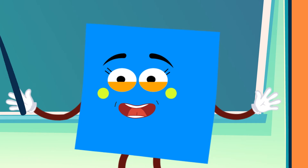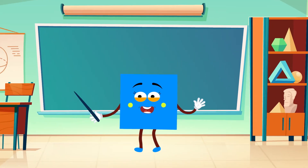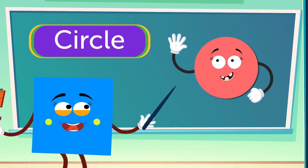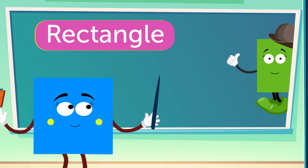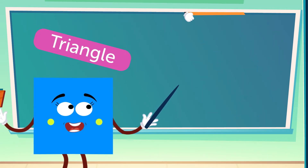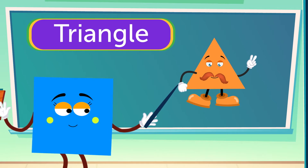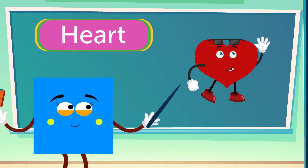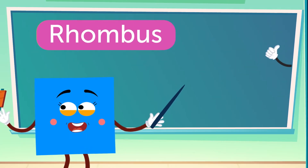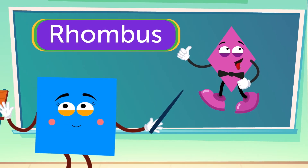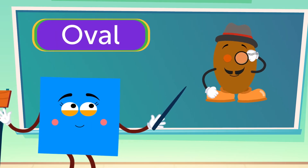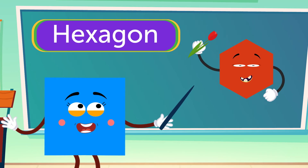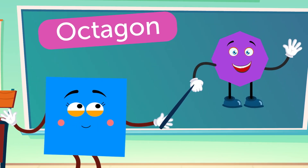Let's meet our friends one more time. I'm Square. Circle. Rectangle. Triangle. Star. Heart. Rhombus. Oval. Cross. Hexagon. Octagon.